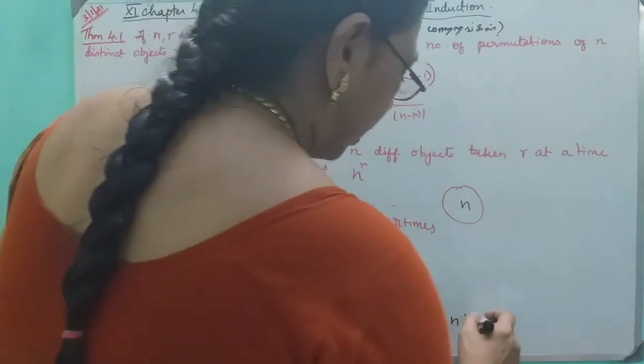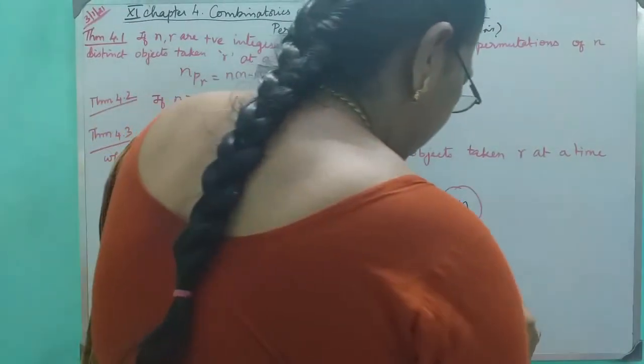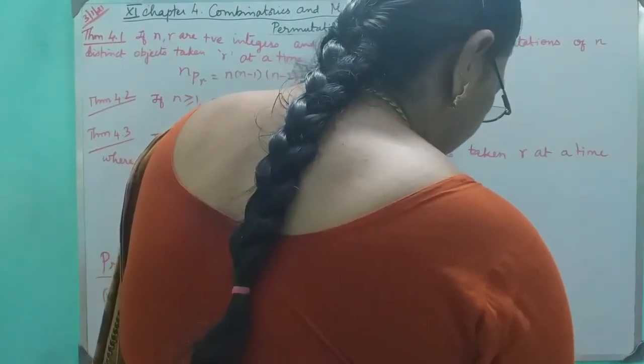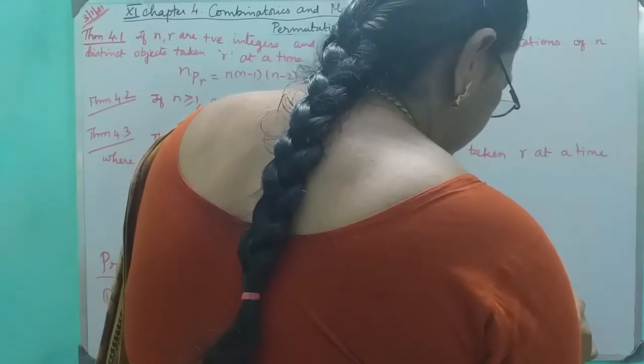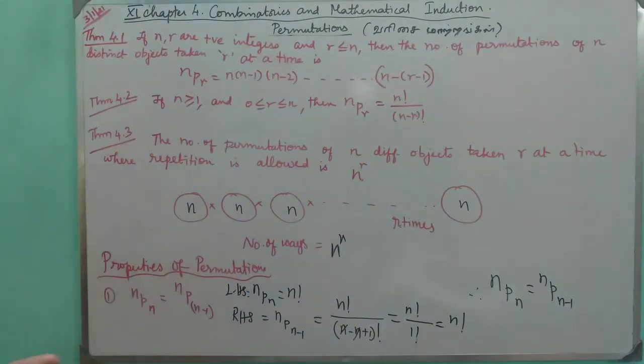Now, RHS is factorial. So, we have factorial. If you have factorial, nPn is equal to nPn-1. And then, we have factorial. After this, I will see you in the next video. Thank you very much.